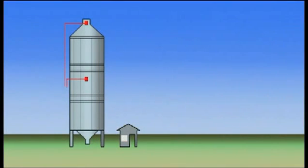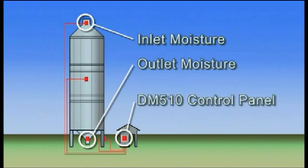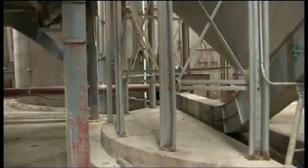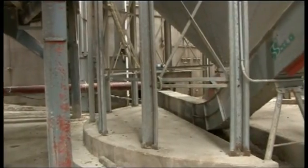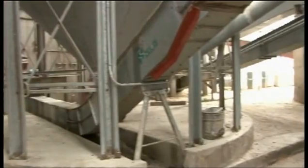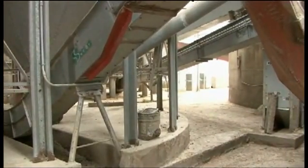The Dryer Master uses online moisture and temperature sensors located at the inlet and the outlet of the dryer, as well as the drying air temperature. Several times a second, these sensors provide moisture and temperature readings to a computer located in the Dryer Master control panel. The computer uses this information to build a model of how your dryer is operating. Then, as inlet moistures and drying conditions change throughout the day, the Dryer Master continuously calculates and automatically adjusts to the best discharge rate for the current situation.